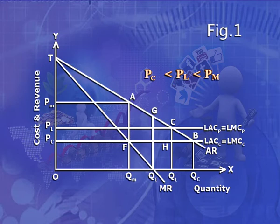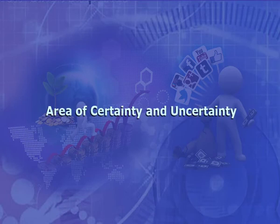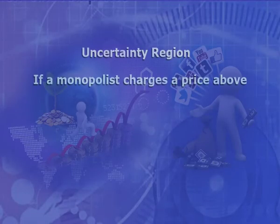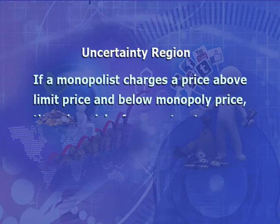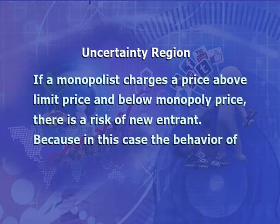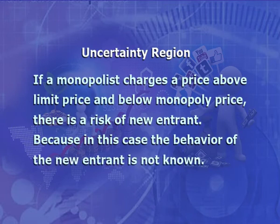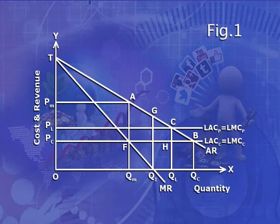Let us understand the area of certainty and uncertainty. Monopoly makes a larger amount of profits due to market power, and higher profits attract new firms. If a firm enters the market, the monopolist will lose market power, leading to competition and lower profits. If a monopolist charges a price above the limit price and below the monopoly price, there is a risk to the new entrant because the behavior of the new entrant is not known — this region is known as the uncertain region. In figure 1, the left of point C is the uncertain demand curve, while the right of C is the area of certainty, where the behavior of the new entrant is known to the monopolist.